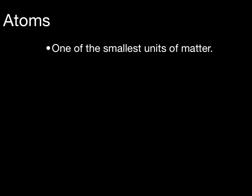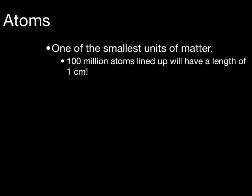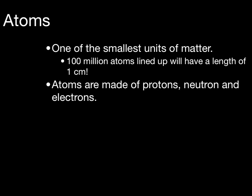Let's take a couple of minutes to talk about atoms. Atoms are one of the smallest units of matter. They are so small that if I was to line up 100 million atoms, they would only measure the length of about one centimeter. Although atoms are very small, they are not the smallest unit of matter. Atoms are made up of even smaller pieces of matter called protons, neutrons, and electrons.